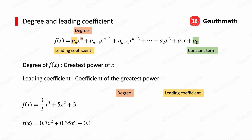Let's see two examples. For f(x) equals (3/2)x to the power of 5 plus 5x squared plus 3, the greatest power is 5, so 5 is the degree of this polynomial, and 3/2 is the leading coefficient. For the second example, comparing the exponents, 6 is the greatest one, so the degree is 6, and the coefficient for that term is 0.35, so 0.35 is the leading coefficient.